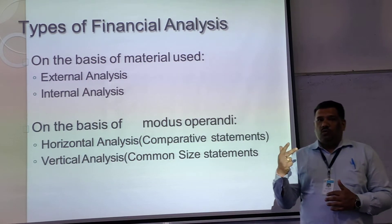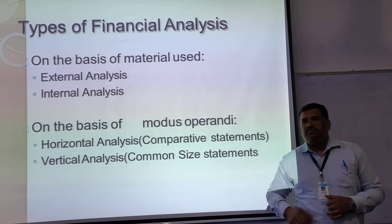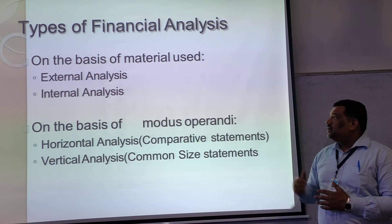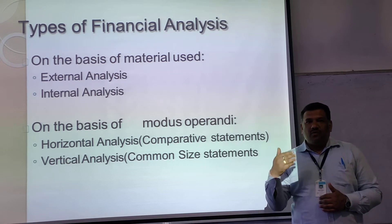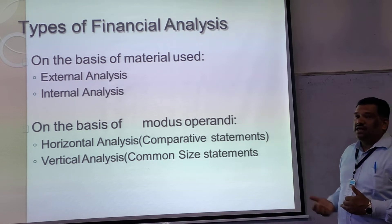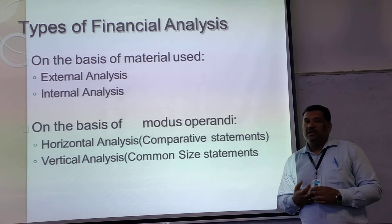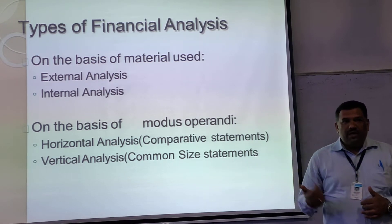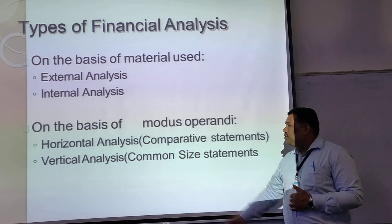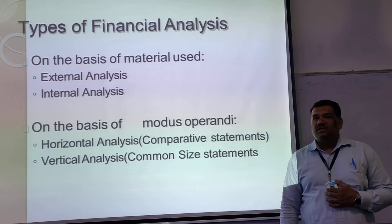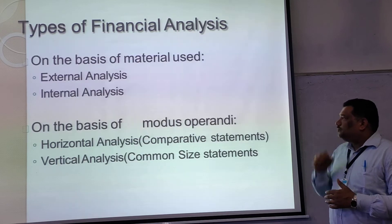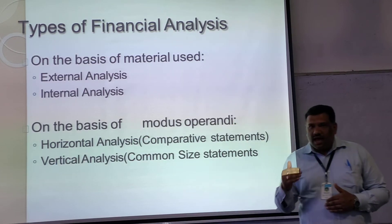There are two types of financial statement analysis. One is based on the material used — that is external analysis and internal analysis. The other is based on the type of operation performed on the financial report — that is horizontal analysis and vertical analysis. In horizontal analysis we prepare comparative statements such as the comparative income statement and comparative balance sheet. In vertical analysis we prepare the common size statement.